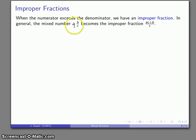So in general, the mixed number whole number a plus fraction b/c becomes the improper fraction a times c plus b over c. And this is a formula that emerges from considering what a is as a fraction with denominator c.